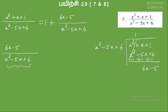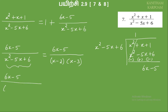So it will be 6x minus 5. The denominator factors as x minus 2 times x minus 3. So 6x minus 5 over x minus 2 times x minus 3.